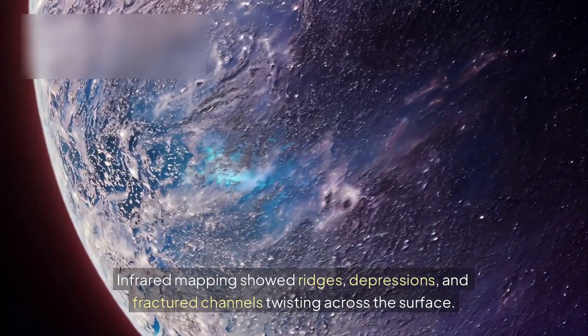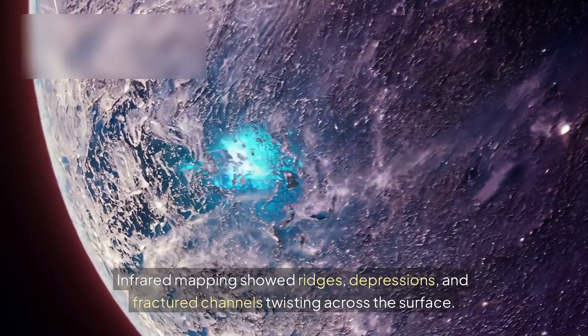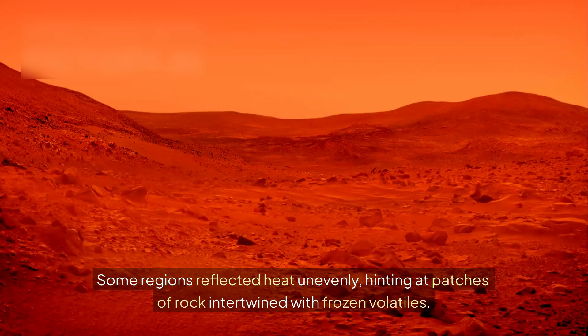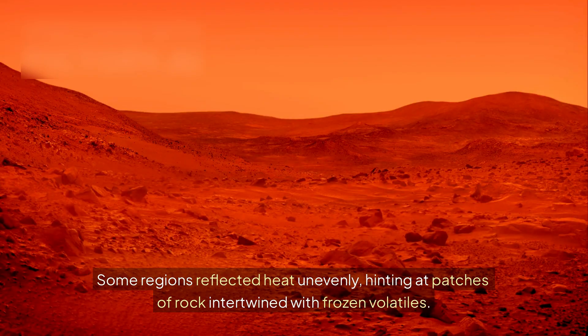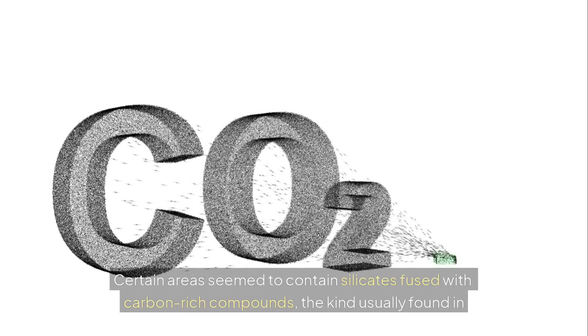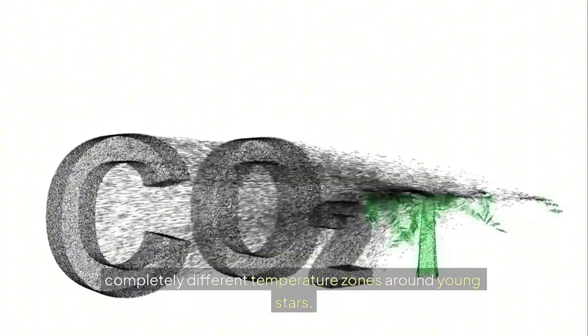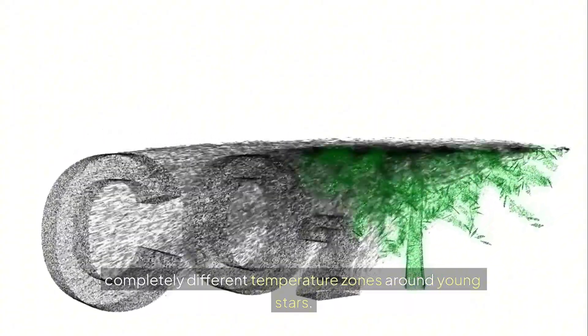Infrared mapping showed ridges, depressions, and fractured channels twisting across the surface. Some regions reflected heat unevenly, hinting at patches of rock intertwined with frozen volatiles. Certain areas seemed to contain silicates fused with carbon-rich compounds, the kind usually found in completely different temperature zones around young stars.